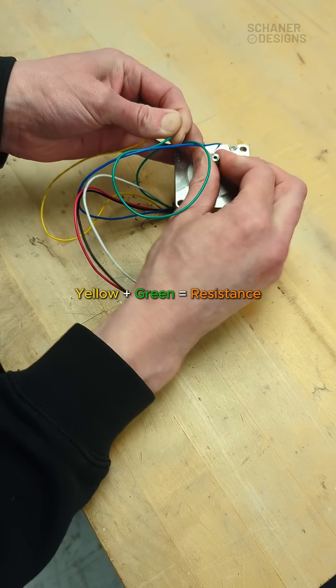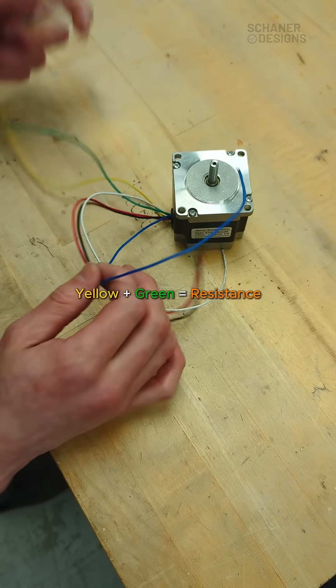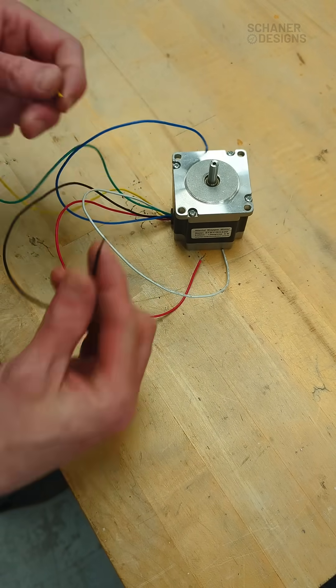So if I connect the yellow and green, that actually makes the shaft harder to turn, so I'm going to try connecting some other wires too and figure out which ones go with it.